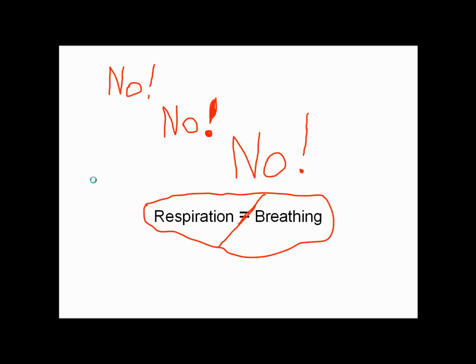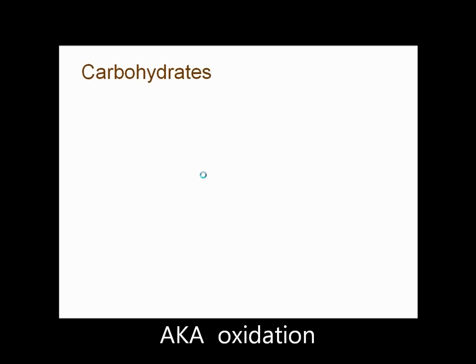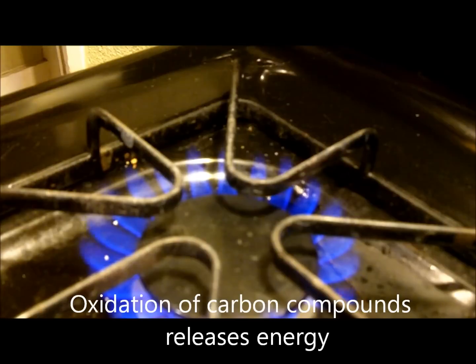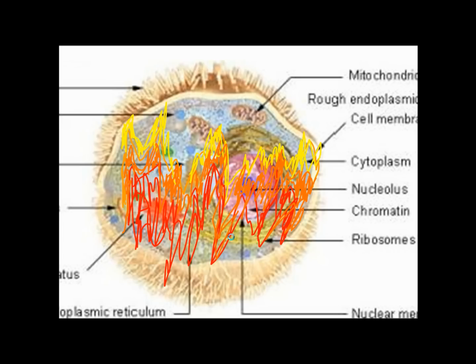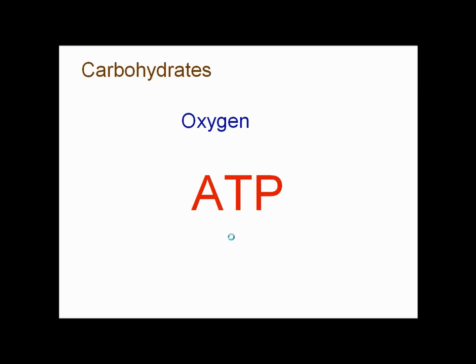Respiration and breathing are not the same thing. As a matter of fact, most organisms don't even have lungs. Respiration requires carbohydrates to react with oxygen and release energy. Cellular respiration is a lot like when you light a fire — the fuel reacts with oxygen and gives off energy in the form of light and heat. It also gives off waste products such as carbon dioxide. Living organisms take carbohydrates, oxidize them, and use the energy to make ATP, adenosine triphosphate.